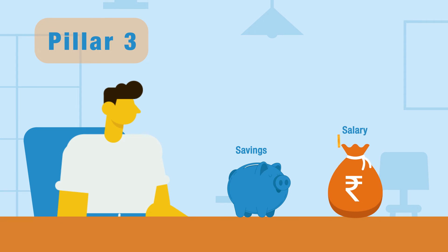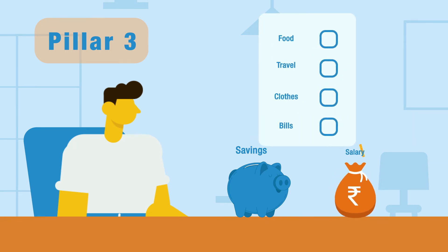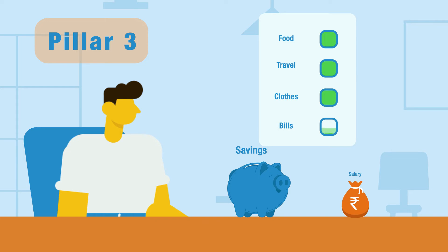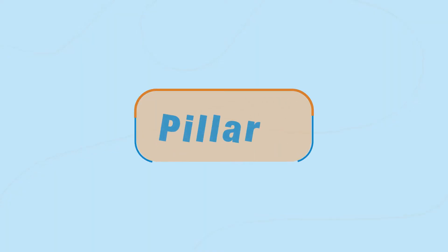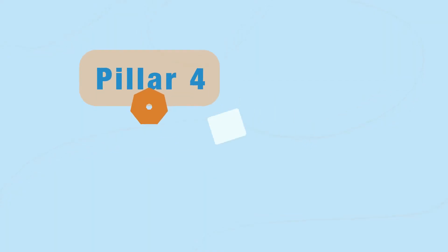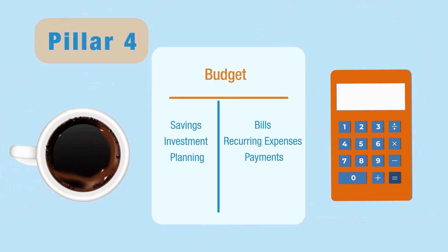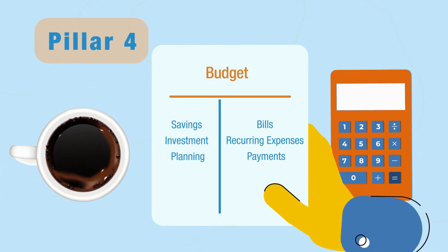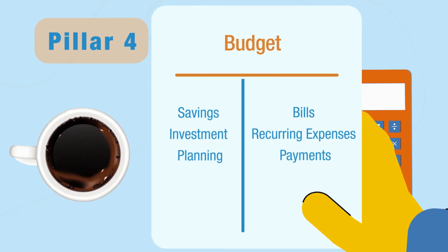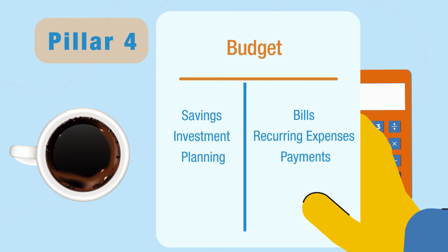A smart saving mechanism is to set aside a part of your income as savings and then spend based on what you have in hand. Pillar four: finally, create a budget for your finances. It not only gives you greater visibility of your expenses but helps you save more.